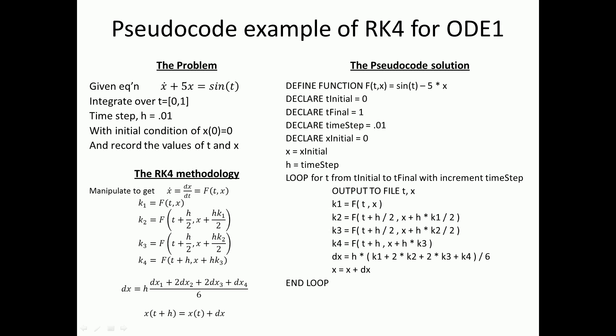Here's a pseudocoded example of Runge-Kutta Fourth Order method to solve the equation x dot plus 5x equals sine of t. And you'd want to integrate it over 0 to 1 time range with a time step of 0.01, and the initial condition is x at a time of 0 is equal to 0. And you also want to record the values of t and x. So the way you would do that is first you isolate the slope and get it as a function of time and position.